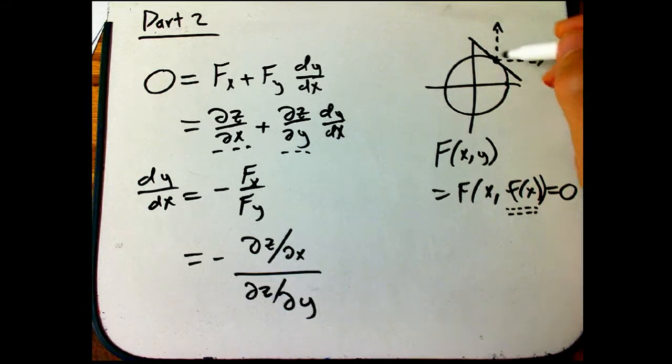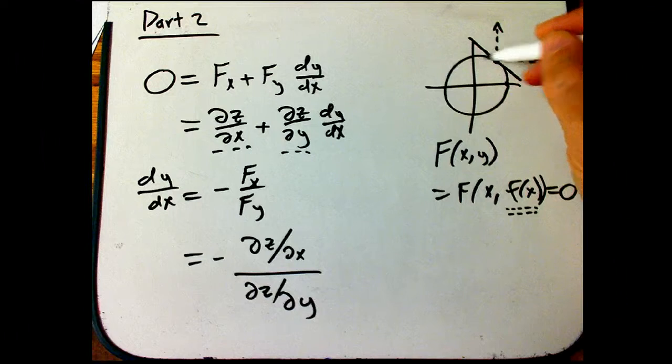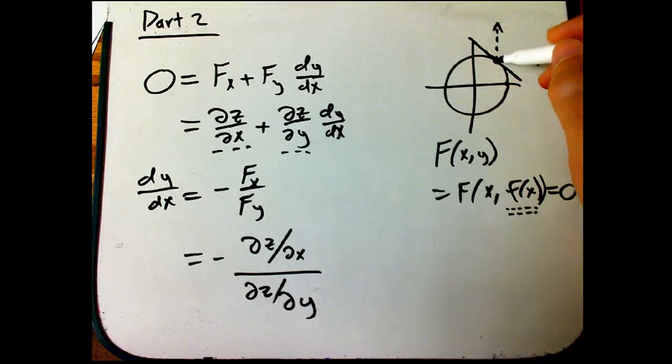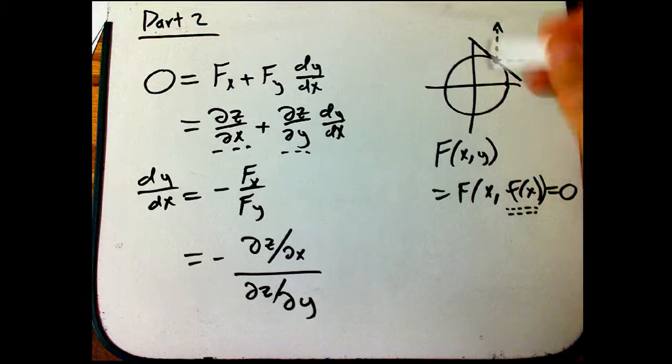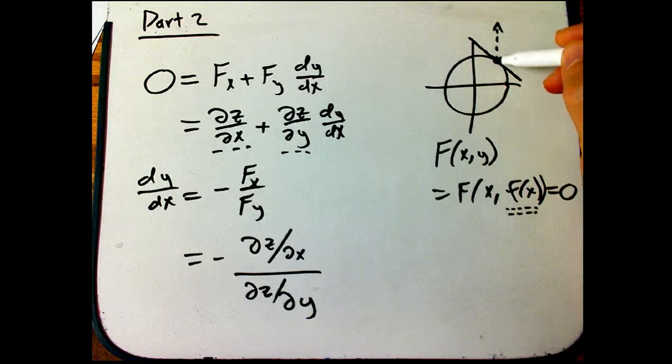So what we do is we imagine, like we're an ant trapped on that thing, but we imagine we could break free and be a beautiful butterfly or something, and fly straight in this direction, straight in this direction, and see what the rates of change would be.